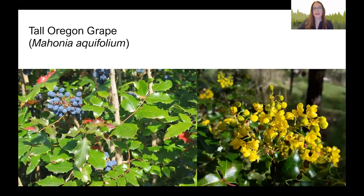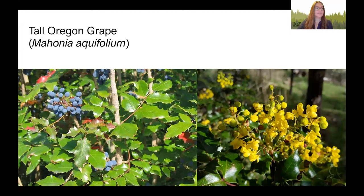Next, tall Oregon grape — one of our few evergreen shrubs in Western Washington. It has a very glossy leaf that looks very similar to a holly leaf. It grows bright yellow flowers that will become dusty-colored blueberries.